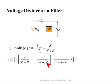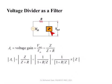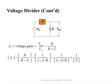If Z has a very large value — going to infinity — this R/Z term becomes zero and the gain is 1. If Z is very close to zero, this term becomes very large and the gain approaches zero. So the voltage gain, the ratio of output to input, is proportional to the modulus of Z, which is itself frequency-dependent — it can be an inductor, a capacitor, or a combination.